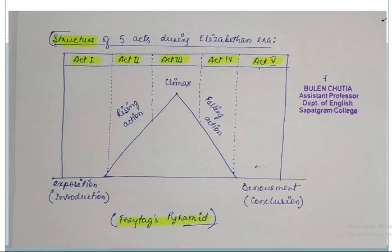And in the fifth act we can see the denouement or the conclusion, that is the resolution of everything could be seen in act five. This pyramidal structure was given by one of the most important critics of drama, Freytag. His full name was Gustav Freytag. He was a 19th century German novelist and playwright, also a critic.